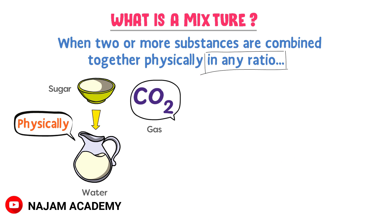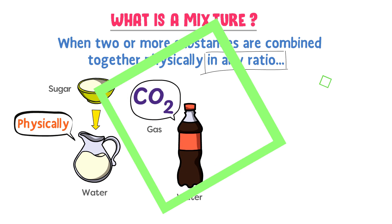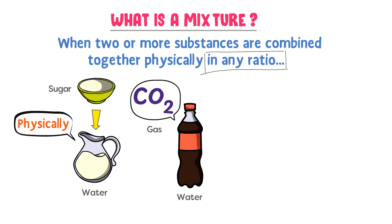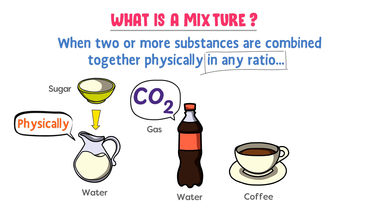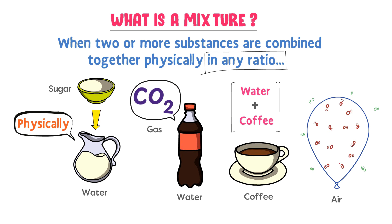Secondly, when you dissolve carbon dioxide gas in the water, you get carbonated drinks. It is also a mixture because water and carbon dioxide gas are combined together physically. Thirdly, coffee is an example of a mixture because coffee and water are mixed together physically. Fourthly, air is also a mixture because different gases like nitrogen gas, oxygen gas, and carbon dioxide gas are mixed together physically.